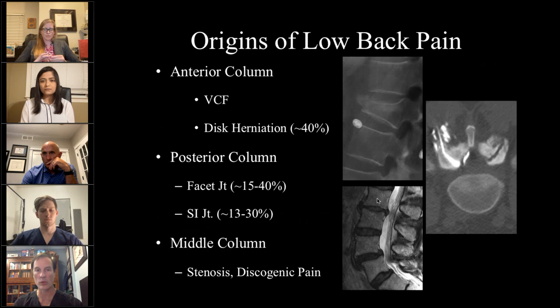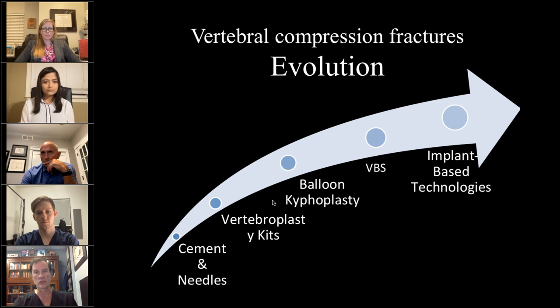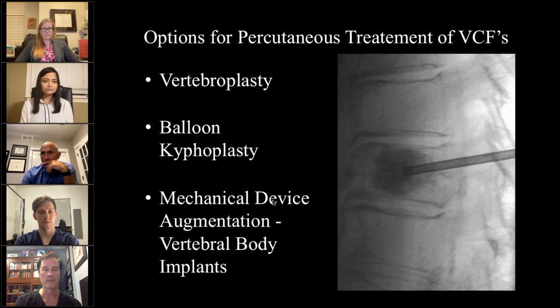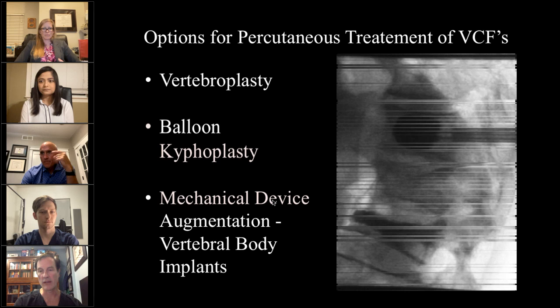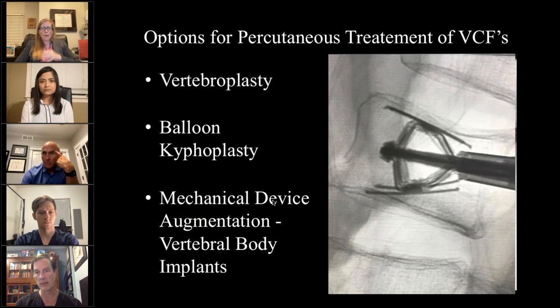Tonight I'll talk about one item: the vertebral compression fracture. This has undergone an evolution from the days of mixing cement with a bowl and a spoon, all the way through vertebroplasty kits, kyphoplasty, vertebral body stenting, and now implants. Vertebroplasty is simply injecting bone cement into the vertebral body through a trocar needle. Balloon kyphoplasty, invented in the 90s, inflates a balloon to create a path of least resistance and reduce the fracture somewhat. Mechanical vertebral augmentation implants are generally the next evolution — shown to be better than the predicate in clinical trials.